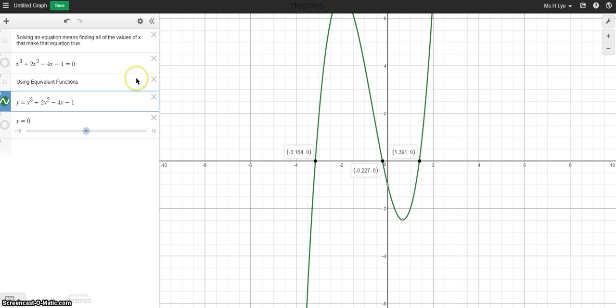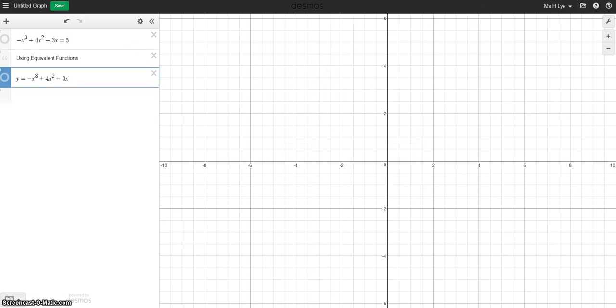Now you're not always going to have ones that equal zero. So here's a second example. We have another cubic equals five. So there's an equation we want to find the solutions for. I'm going to turn this function on here. You can see I've copied the left side of the equation again. But this time I'm not looking for where it equals zero. I'm looking for where it equals five.